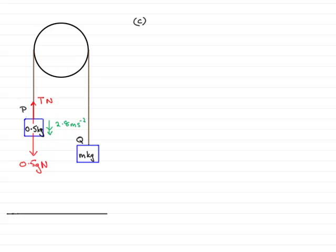Well, what we know is because the string is inextensible, when p moves downwards m is going to immediately move upwards. The string does not stretch, so that means the accelerations are going to be exactly the same.